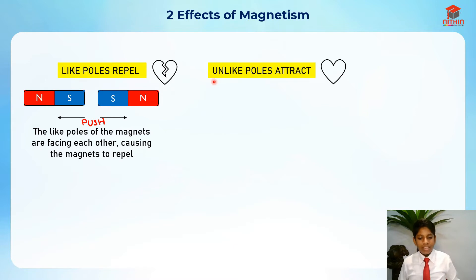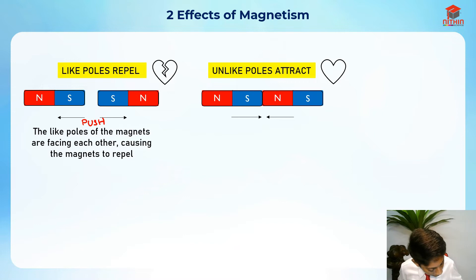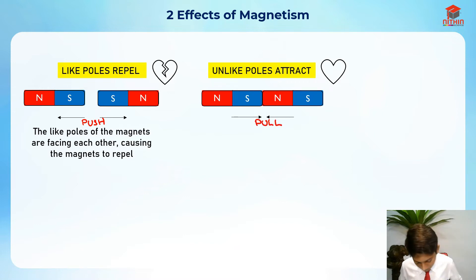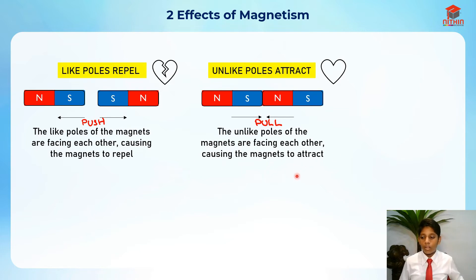The next effect is that unlike poles attract. South and north attract because they are unlike poles, so there is a pull force. The unlike poles of the magnets are facing each other, causing the magnets to attract.